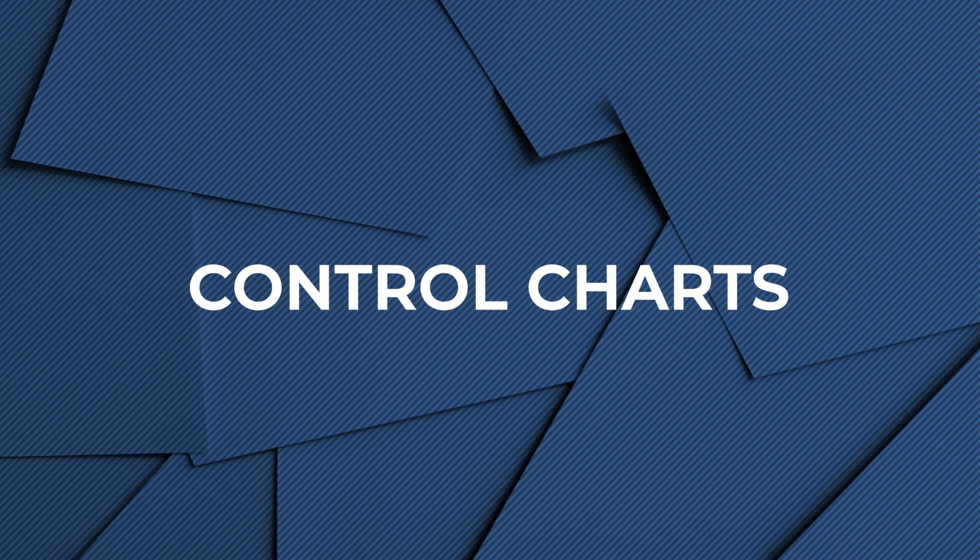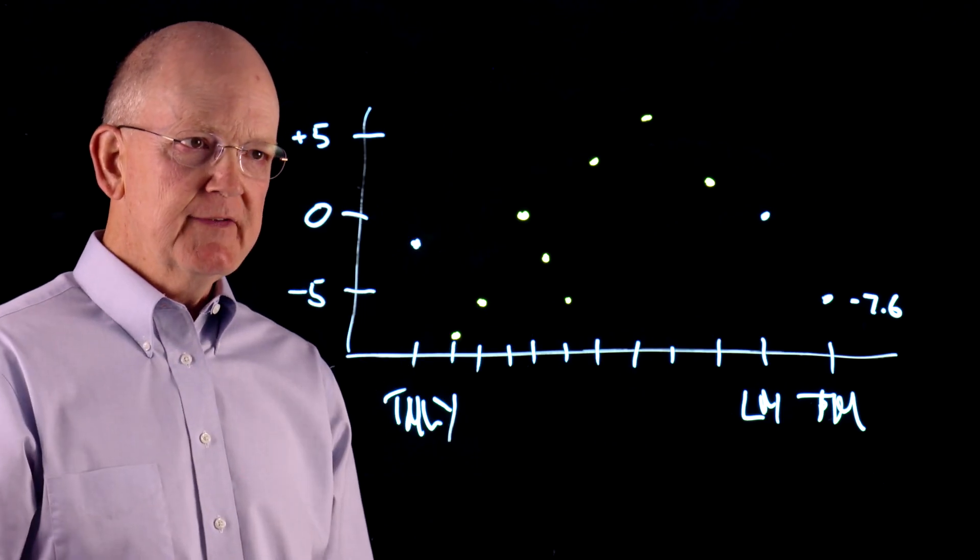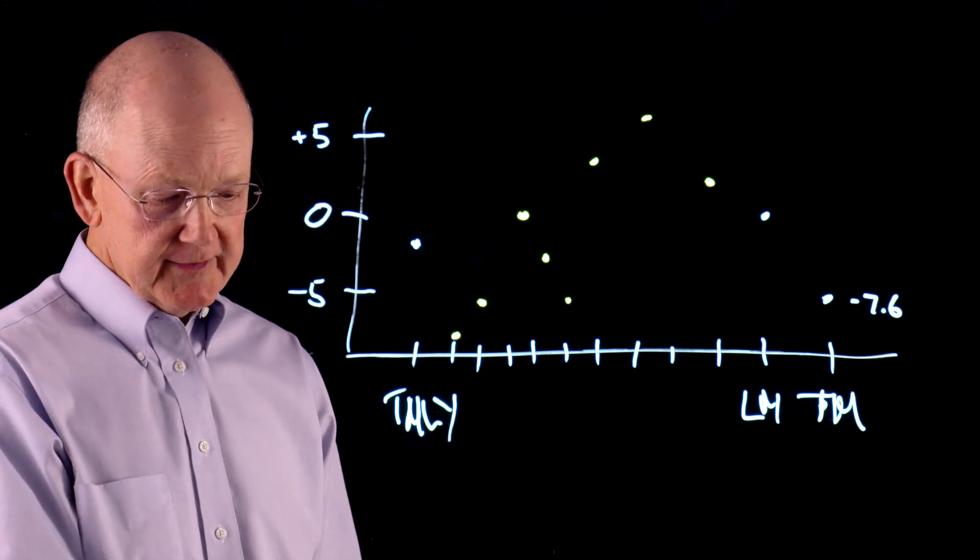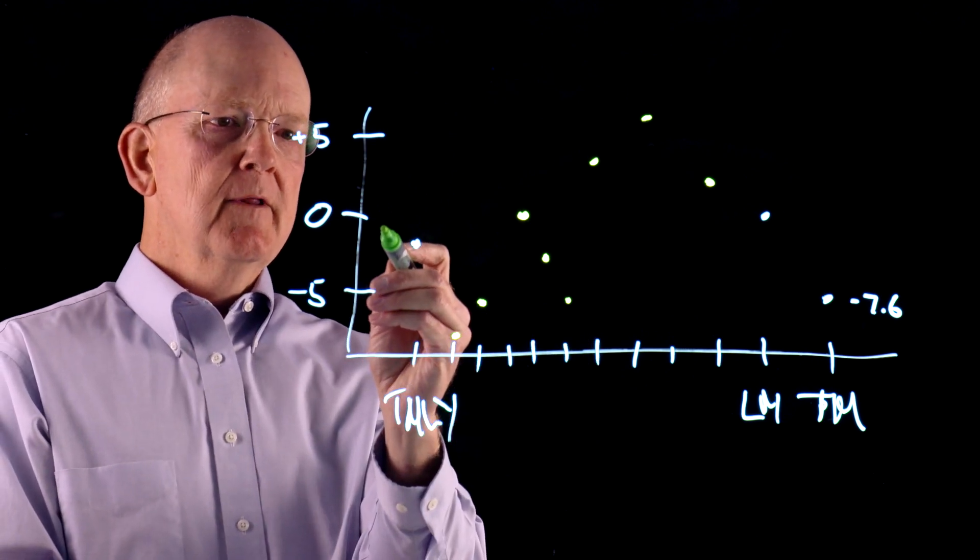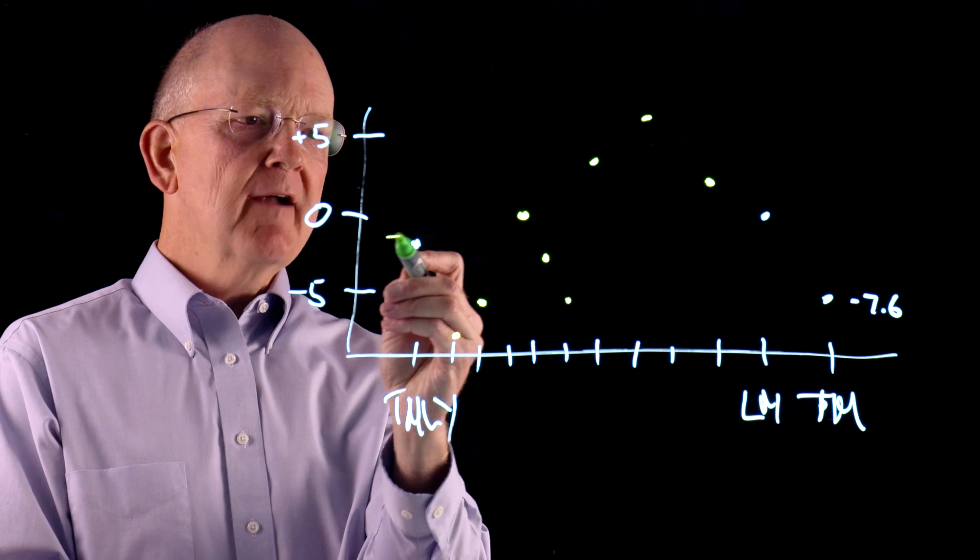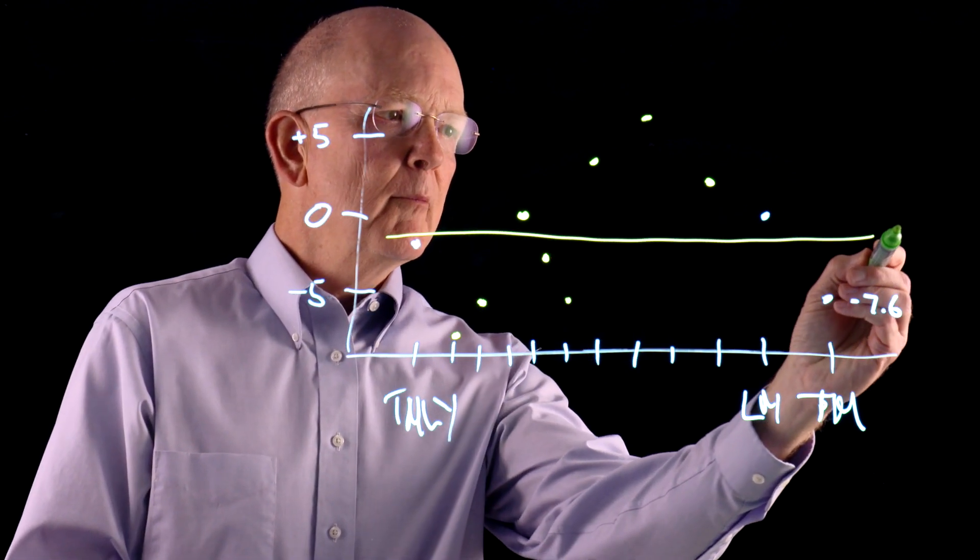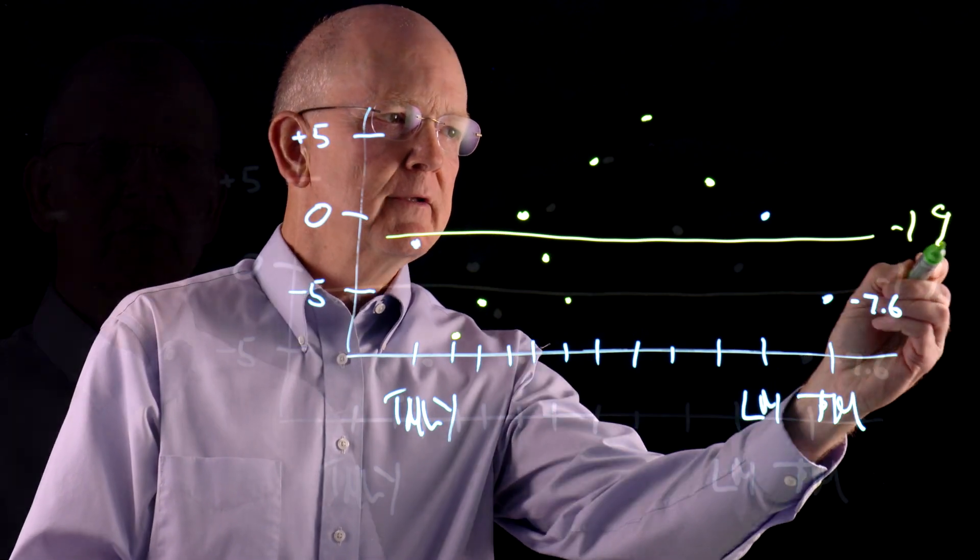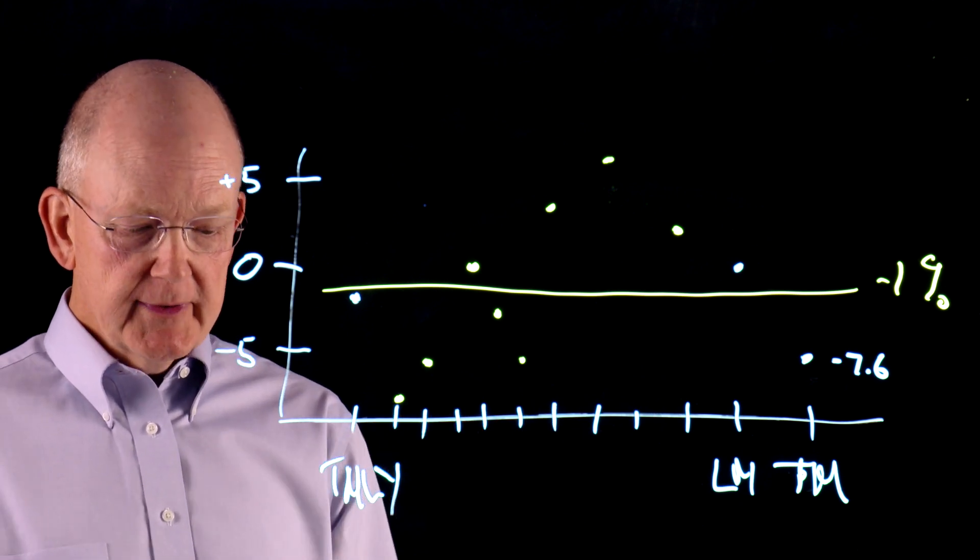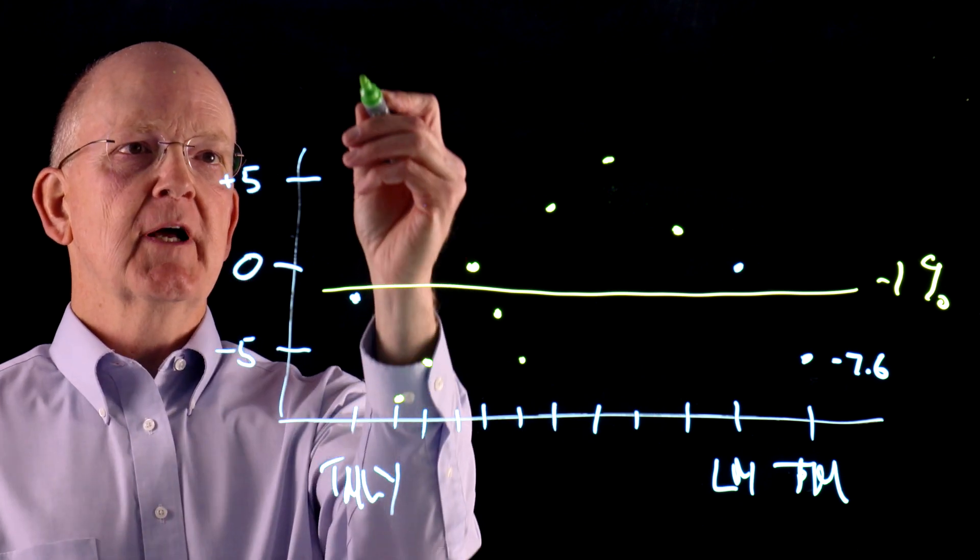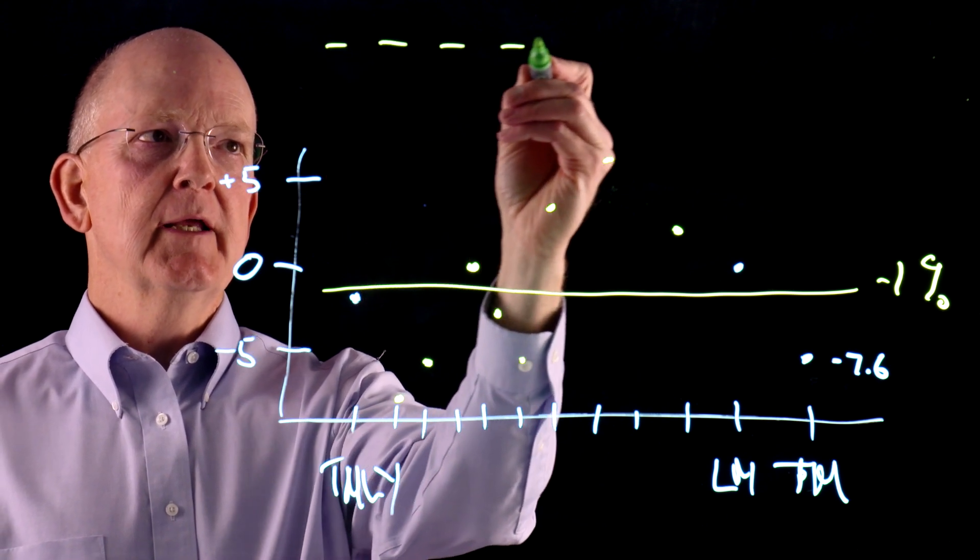The subject of this course is control charts. And so I could make a control chart of these data and have actually done that. And it says that over this last period of time, this process has averaged minus 1%. If you calculate the control limits based on these data, you get that the upper control limit for this process is 11.8%.